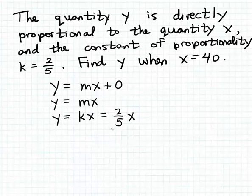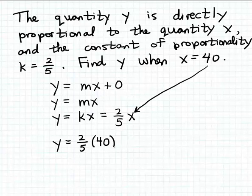Now we want to use this formula to find y when x = 40. That's easy because we just substitute 40 into our formula. So y = (2/5) × 40. Let's do this calculation.